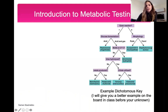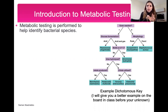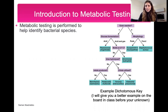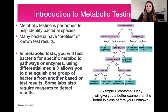We talked about this in class, but the reason why you do metabolic testing is to identify a bacterial species. For example, if you have a urine culture from a patient and you're trying to identify what bacteria is in it, you could do a series of metabolic tests. These days people also use DNA sequencing, but metabolic testing is still very valuable. A specific bacteria will have a known profile of what it's positive and negative for.